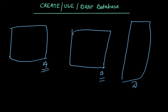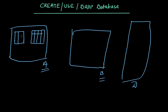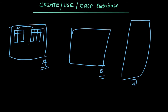Inside a database we have multiple schemas, that is multiple tables. In these tables we have relations. Now in a table we have multiple columns. Each row is called a tuple or record, and the column headers are called attributes. In this example table we have four attributes and multiple records.